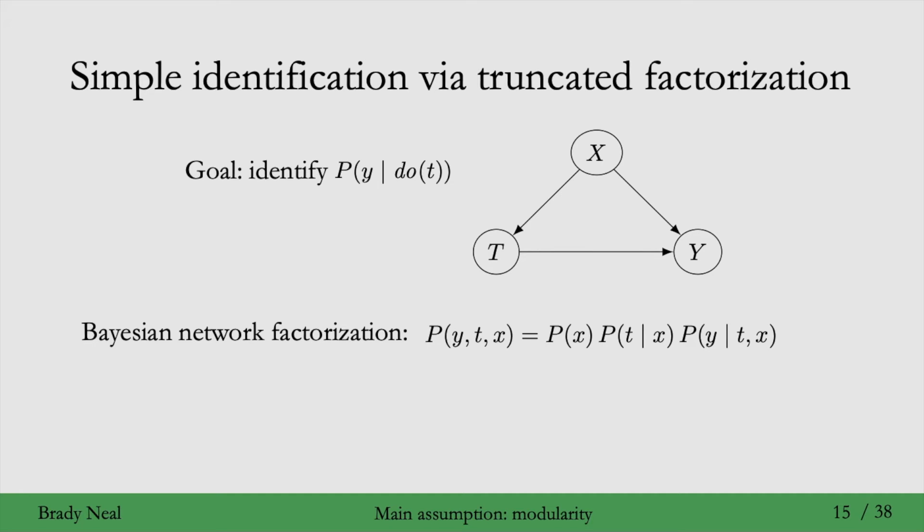So x has no parents, so we just get p of x. The parent of t is x, so we get p of t given x. And then similarly, y has two parents, so we get p of y given t comma x.